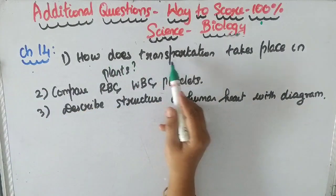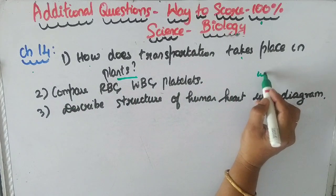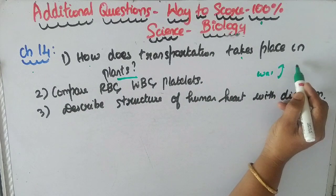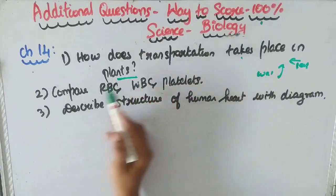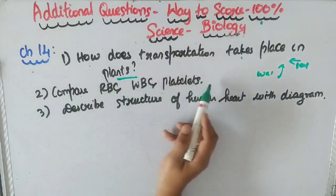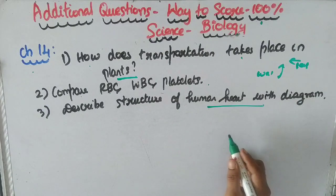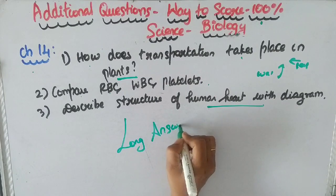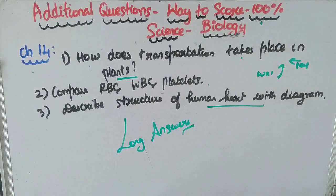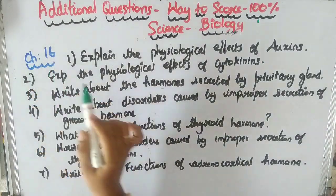Question 9: How does transportation take place in plants? Question 10: Compare RBC, WBC, and platelets. Question 11: Describe the structure of the human heart with a diagram.